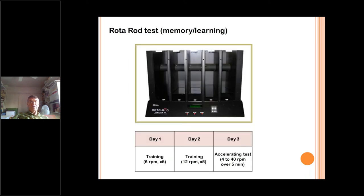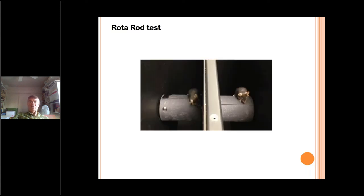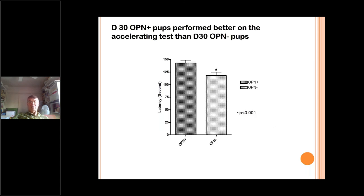We also did the rotarod test, another way to assess cognitive performance. Pups go on a rotating wheel, and the more they have learned and remember how to behave on the wheel, the better they perform. Again, there was a highly significant difference at day 30 in pups fed milk with osteopontin compared to those without.